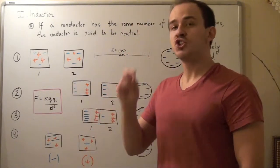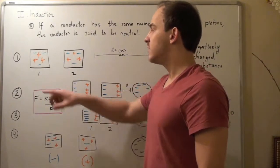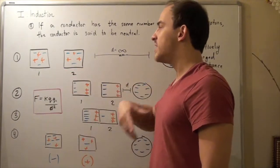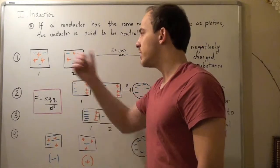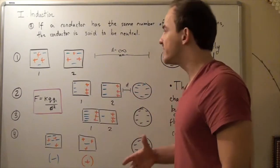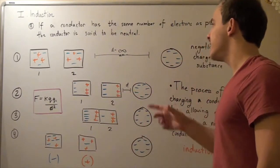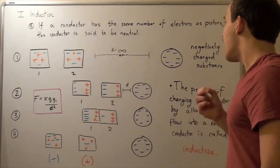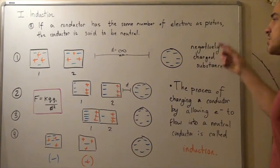Suppose I have two such conductors, conductor one and two, and they each have three protons and three electrons. And suppose an infinite distance far away, d equals infinity, I have a negatively charged object.